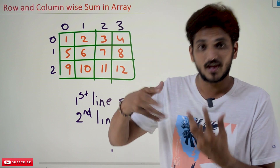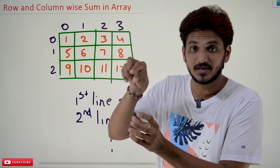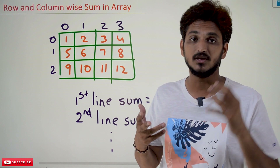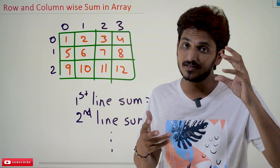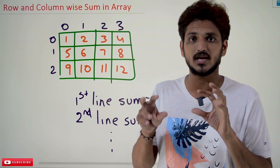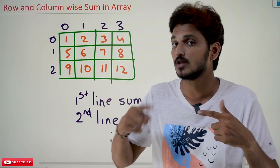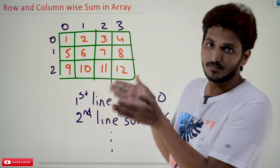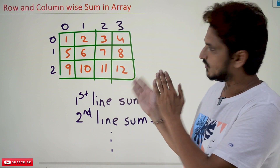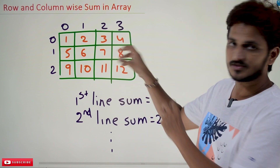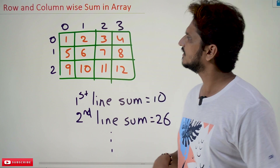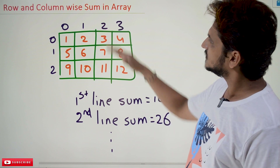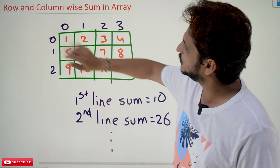Coming to today's example, we are going to use different ways to access the elements present in an array. In many coding examples, if you understand the different ways to access elements, these are things we are going to use frequently. That's why with a simple example we are going to understand one more way to access the elements.